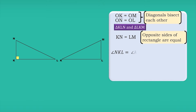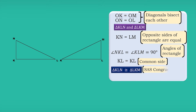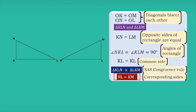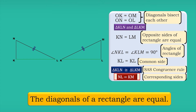Angle NKL equals angle KLM equals 90 degrees. KL equals KL, as it is the common side. Therefore, triangle KLN is congruent to triangle LKM. NL and KM are the corresponding parts of these two congruent triangles — that is, the diagonals of a rectangle are equal.